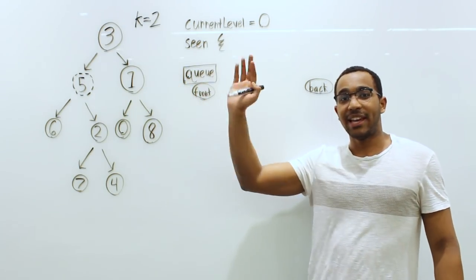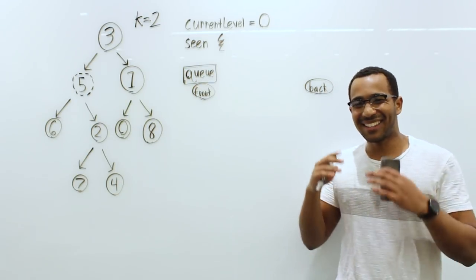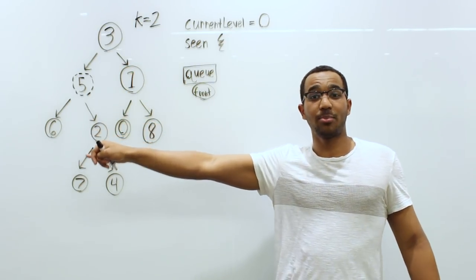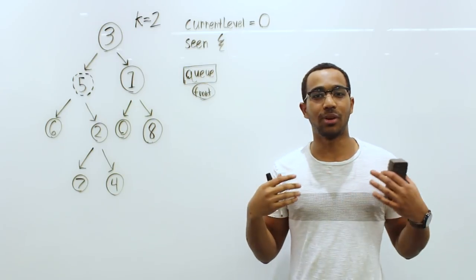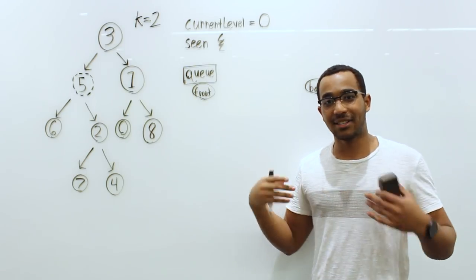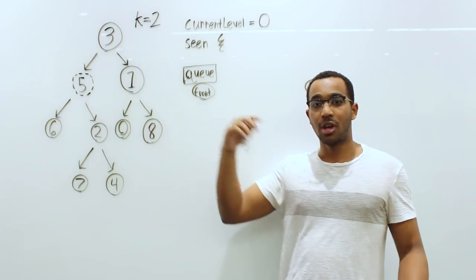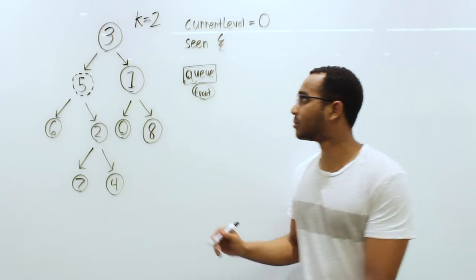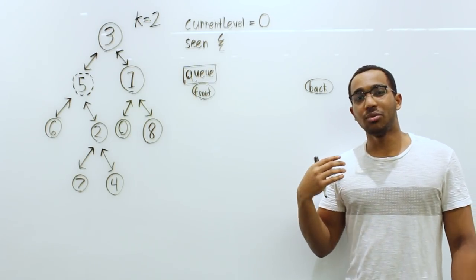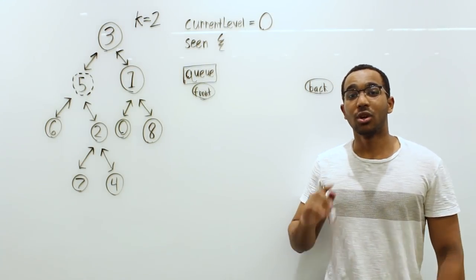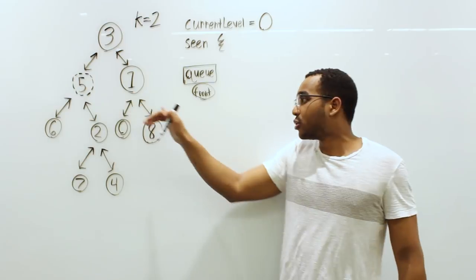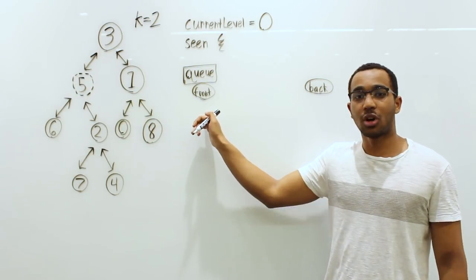Our K is going to be two. Before we do anything, we need to turn this into an undirected graph using our hash table, finding each node's parent so we can traverse back. We're creating mappings that let us treat the tree as if it were an undirected graph, so we can go back upwards. Now we have our original tree and we're going to add the first node to the queue and the seen hash table and start the search.